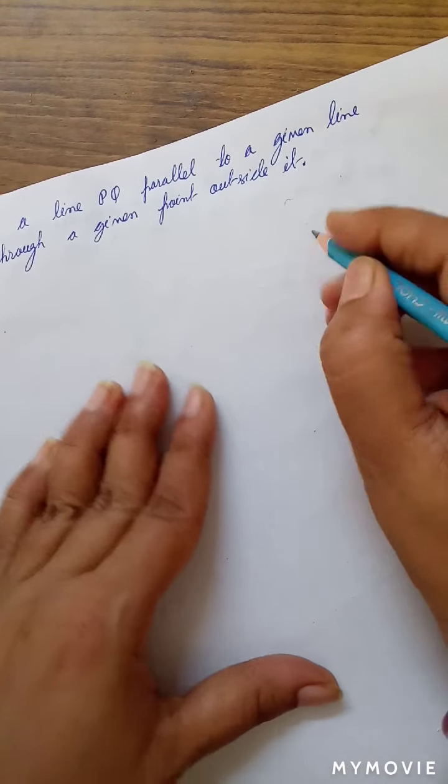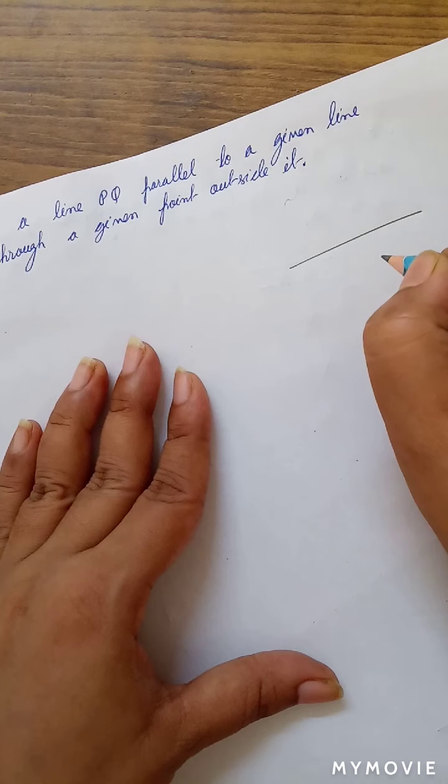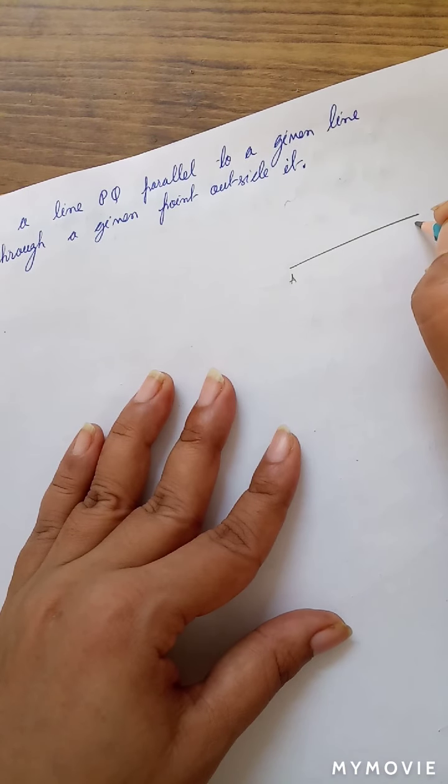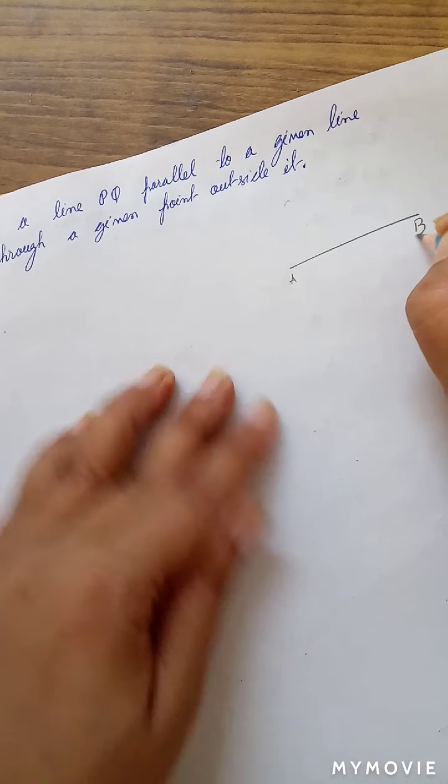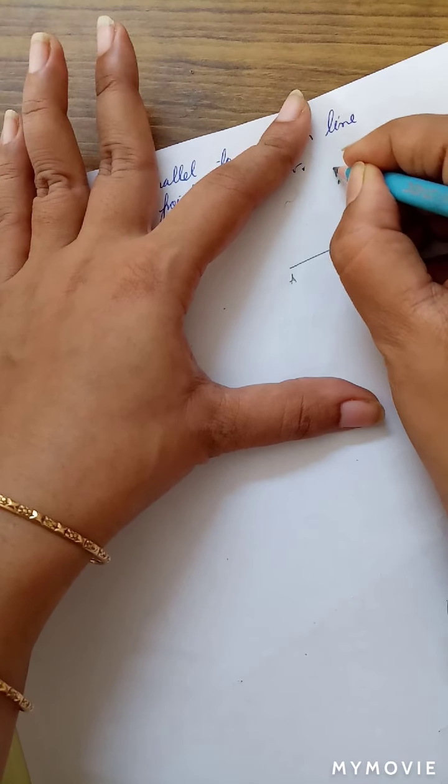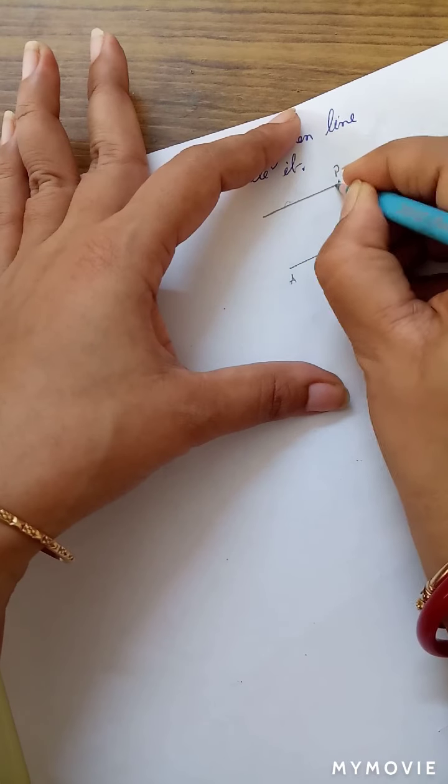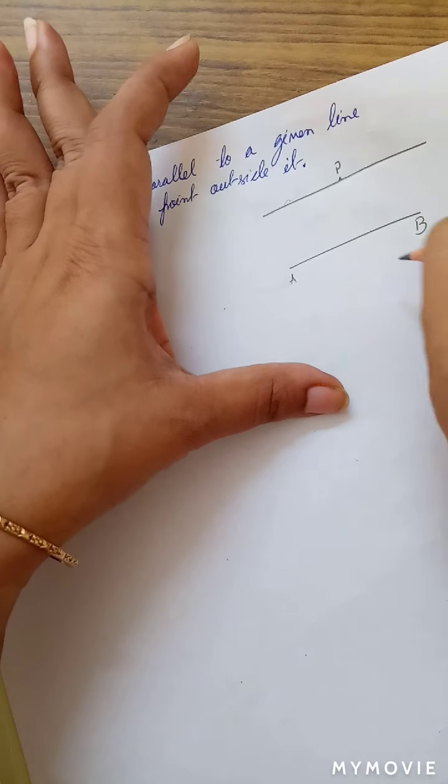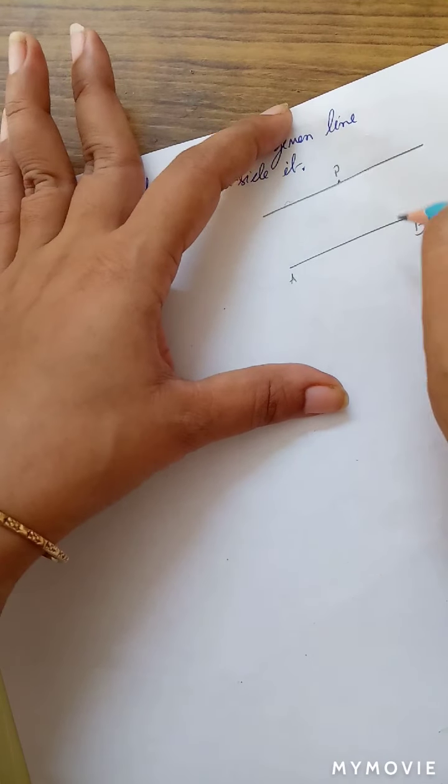So here we have a line, say AB, and we want to construct—and say there is a point P here—and we want to construct a parallel line, a line which is parallel to AB and it should pass through P.